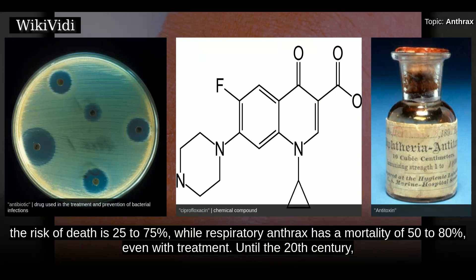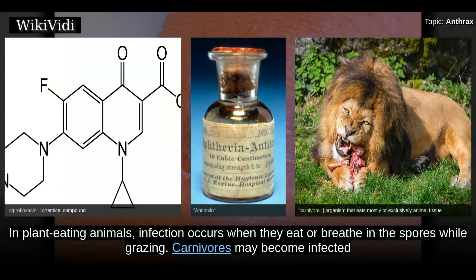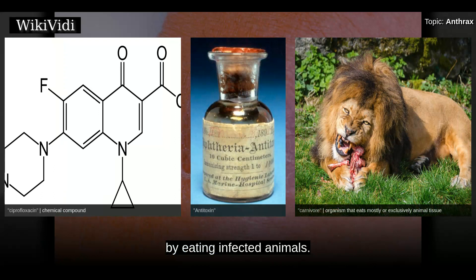For intestinal infection, the risk of death is 25 to 75%, while respiratory anthrax has a mortality of 50 to 80%, even with treatment. Until the 20th century, anthrax infections killed hundreds of thousands of people and animals each year. Anthrax has been developed as a weapon by a number of countries. In plant-eating animals, infection occurs when they eat or breathe in the spores while grazing. Carnivores may become infected by eating infected animals.